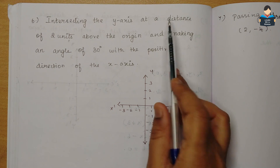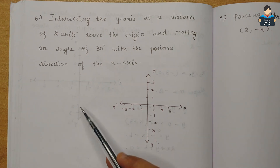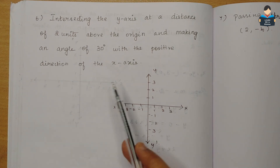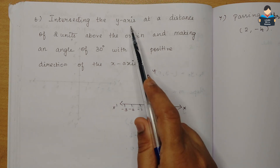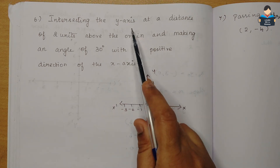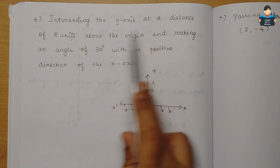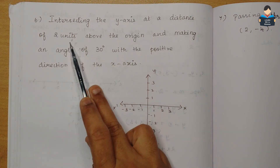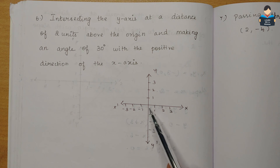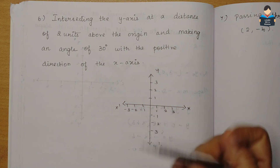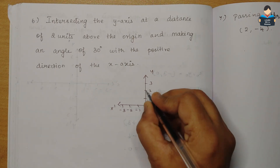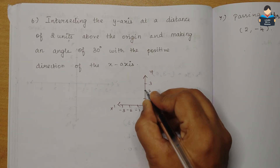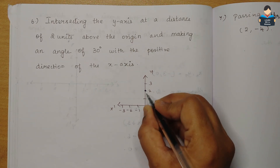The line is on the y-axis side. The distance is on the y-axis, 2 units above the origin. So the line passes through the y-axis at 2 units above. The origin is below, and the line is above here.